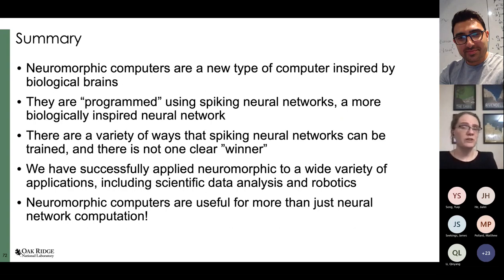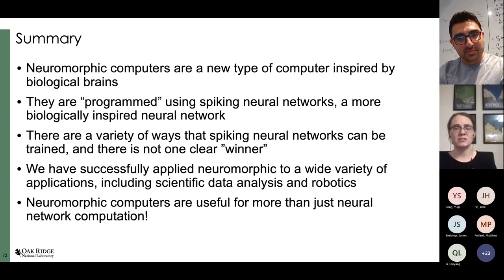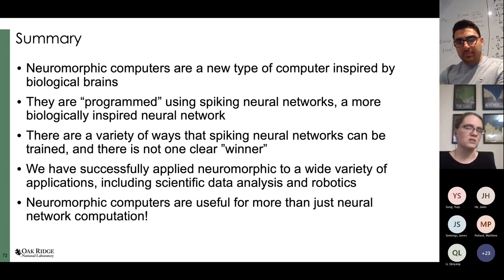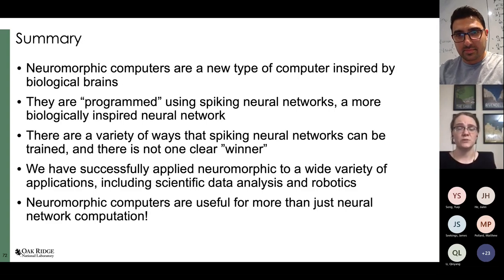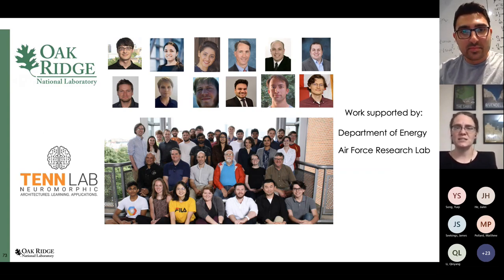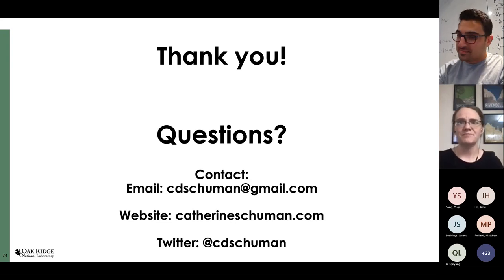To quickly summarize: neuromorphic computers are a new type of computer inspired by biological brains, programmed with spiking neural networks. There are a variety of ways spiking neural networks can be trained — no clear winner, all have advantages and disadvantages. We've applied neuromorphic to a wide variety of applications including scientific data analysis and robotics, and neuromorphic computers are useful for more than just neural network computation. There's a wide open realm of different types of computation that neuromorphic computers can potentially be useful for. Thank you to my collaborators at Oak Ridge and the TenLab Neuromorphic Computing Research Group at University of Tennessee, as well as our funding agencies.